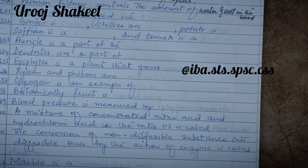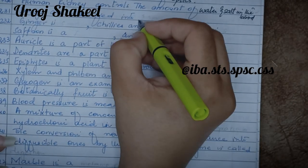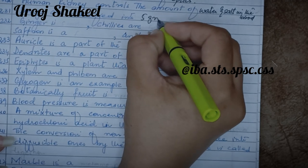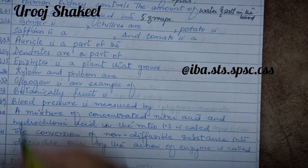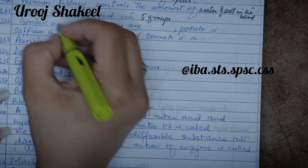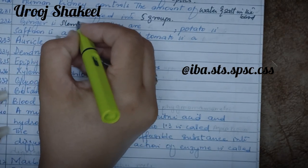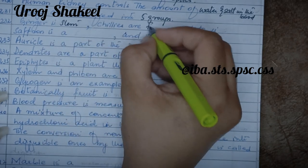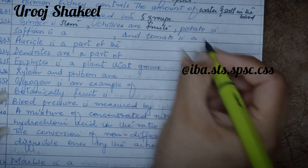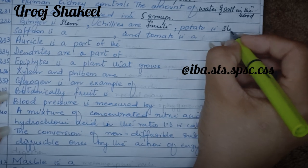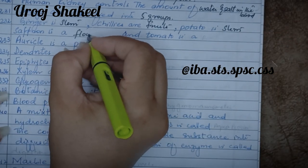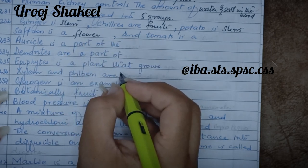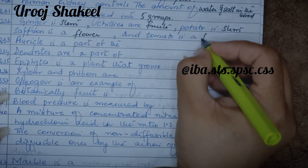Drugs are classified into basically five different groups. Ginger is a stem, whereas chillies are fruits because they contain seeds. Potato is also a stem. Saffron is a flower, and tomato is a fruit.